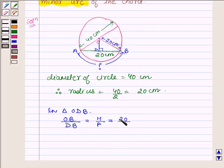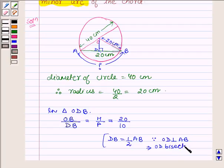And P which is DB is 10 cm, since DB is equal to half of AB, and this is because OD is perpendicular on AB. This implies OD bisects chord AB.